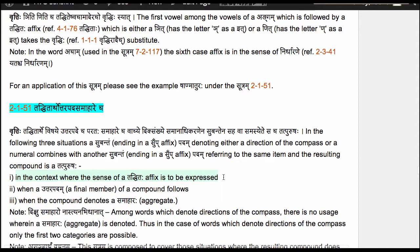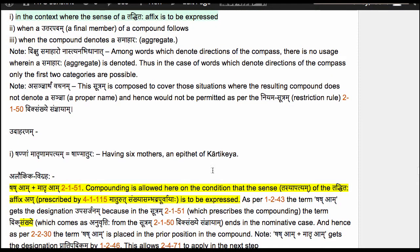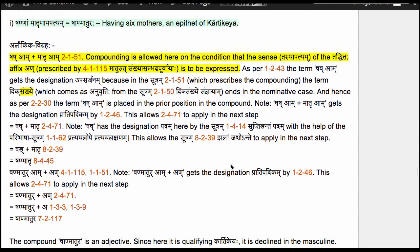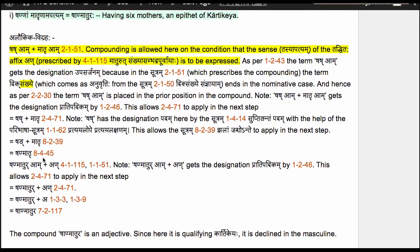At that time we will derive the form Shandmatraha, which means Shandam Matrganam Apatyam Shandmatraha — having 6 mothers. This is an epithet of Karthikeya because he had 6 Krittikas as his 6 mothers. This form is derived by adding the Taddhita affix An to the compound Shandmatra declined in the 6th case, and in the final step of the derivation we have to substitute the Vridhi letter — the long A — in place of the short vowel A, which is the first vowel in Shandmatra.